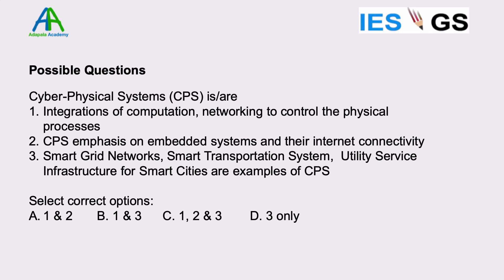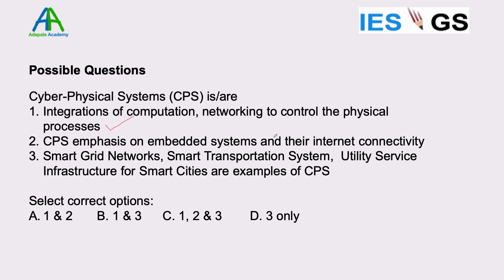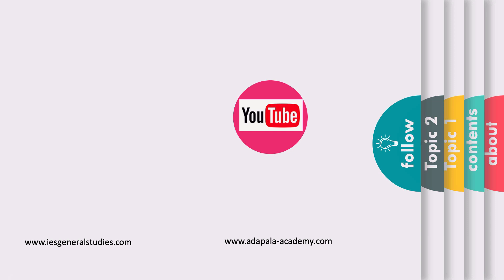A practice question on CPS: Statement one — CPS is the integration of computation and networking to control physical processes (correct). Statement two — CPS has emphasis on embedded systems and their internet connectivity (incorrect, as CPS does not necessarily emphasize internet connectivity; that is IoT). Statement three — smart grid networks, smart transportation systems, and utility infrastructure for smart cities are examples of CPS (correct, though they can also be IoT examples). If you are sure statement two is wrong, you can eliminate options containing it and go with option B. That concludes today's session — please follow the YouTube channel and like on Facebook.